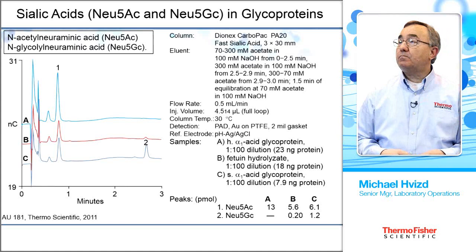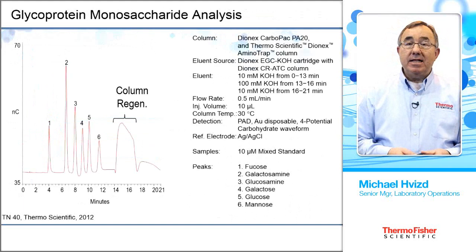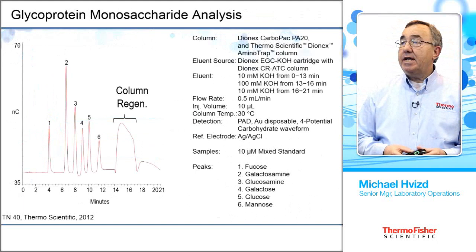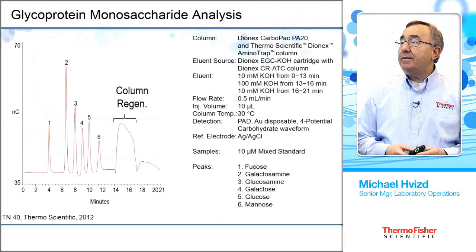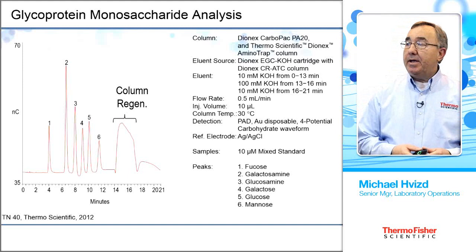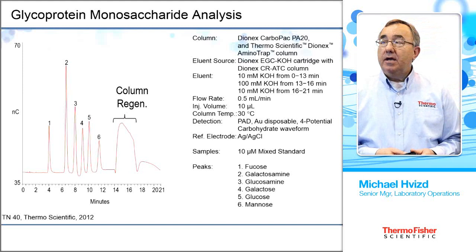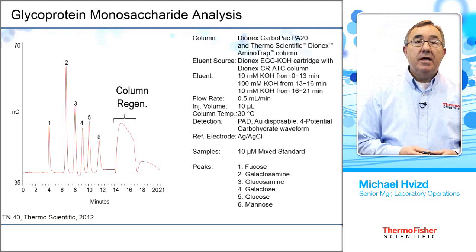Another glycoprotein analysis here — the sialic acids, as mentioned earlier, are those terminal sugars. Here we're looking at the carbohydrate moiety off of a glycoprotein where we've digested the sample, referencing Technote 40 — take a look at that one online when you have a chance. This one uses the PA20 column with eluent generation. Because we're using a low concentration of hydroxide, we do a column regeneration — running up to 100 millimolar KOH for a short time to regenerate and clean the column.